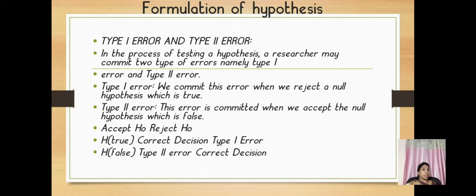Accept H0, reject H0. H true: correct decision, Type 1 error. H false: Type 2 error, correct decision.